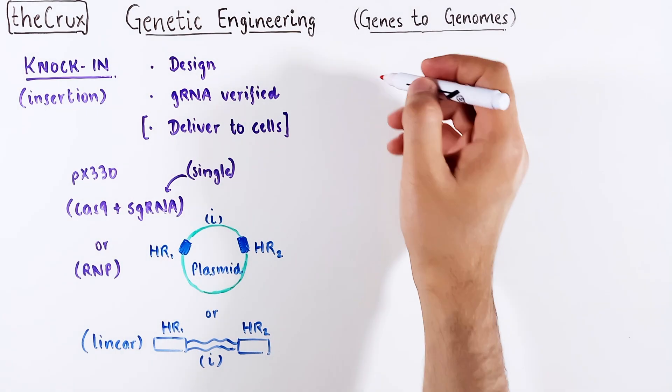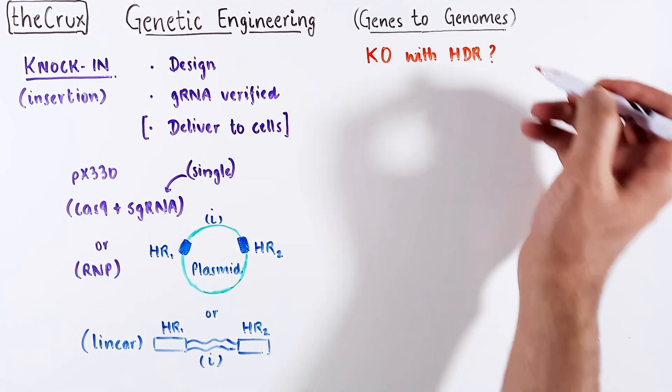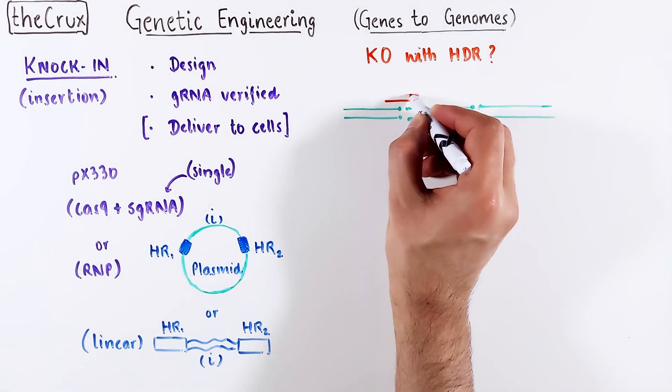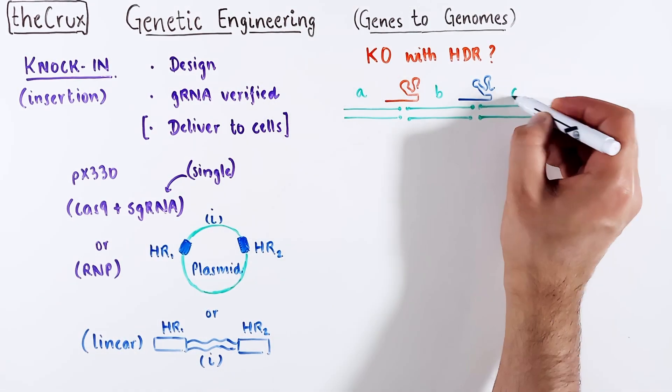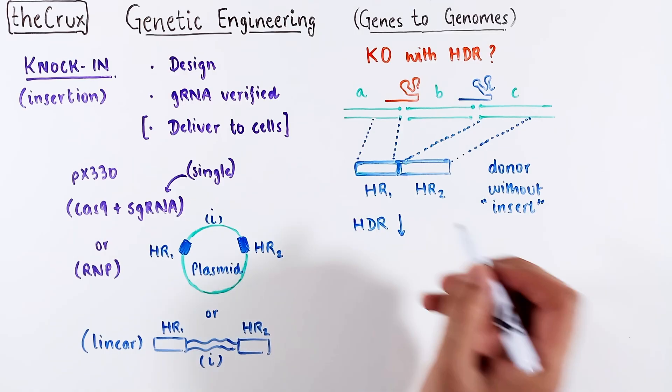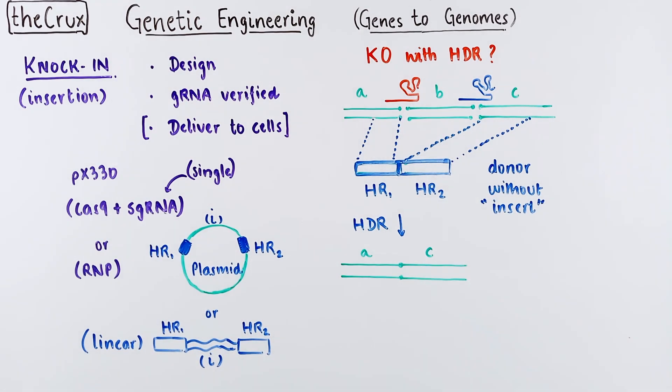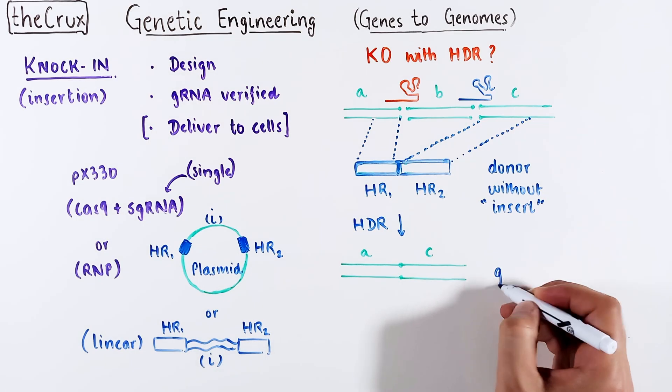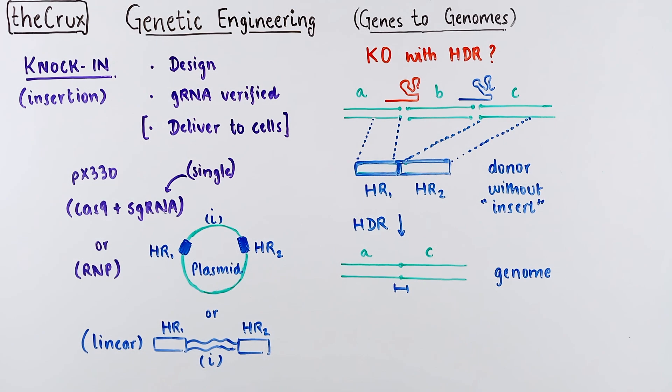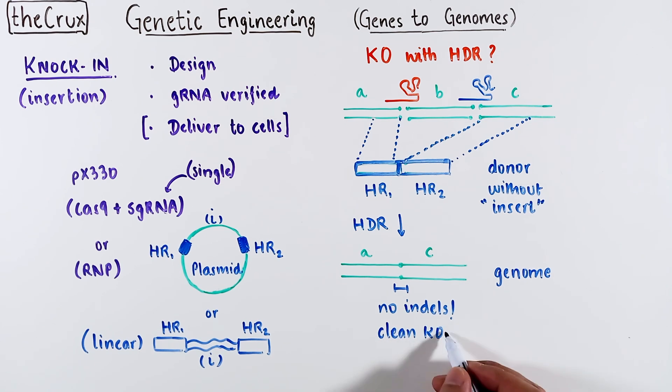So, that was a donor-based insertion that relies on HDR. You can also try to do a knockout with HDR. The idea is pretty simple. You get two Cas9s on a donor, except that the donor is missing a custom insert. And after HDR, the genome is missing a piece of DNA. And since this is an HDR-based process, the repair is expected not to give you any indels. And that is why I call this type of KO strategy a clean KO.